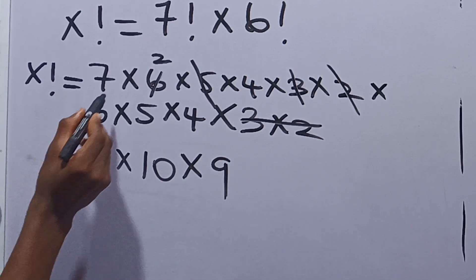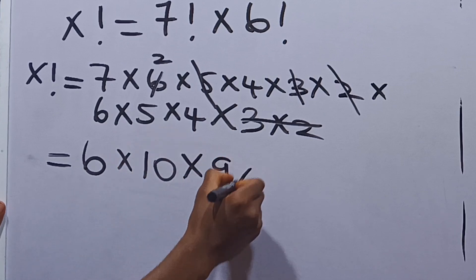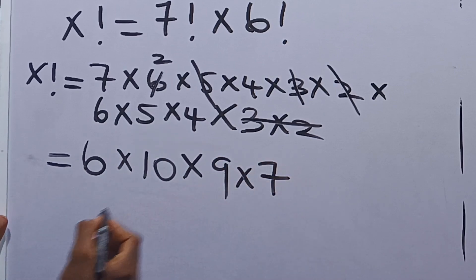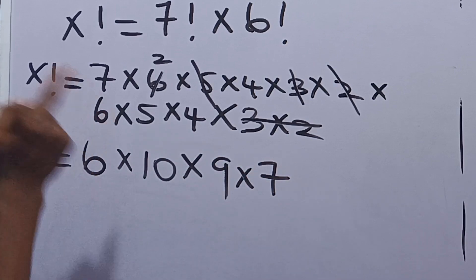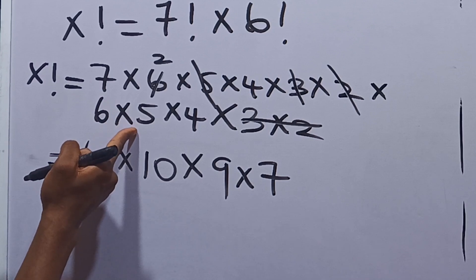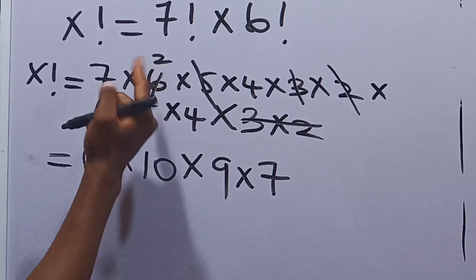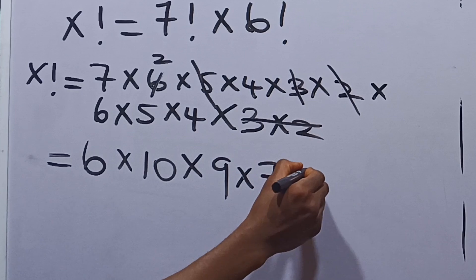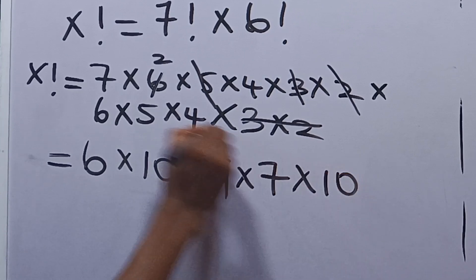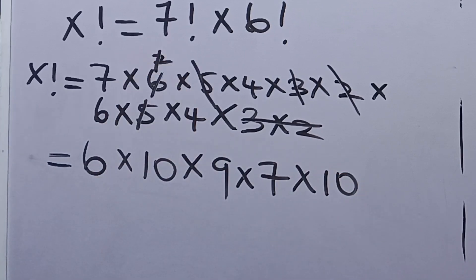Now again, this is the only 7 we have and we can leave 7 for now. Again, we have 5 and we have 2. So we can take 5 and 2 again to give us 10. So 5 and 2 strike out.